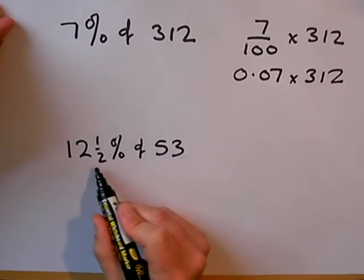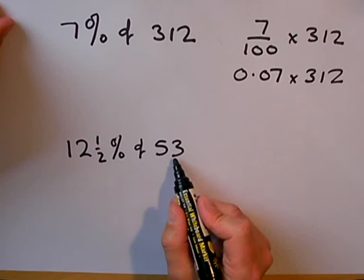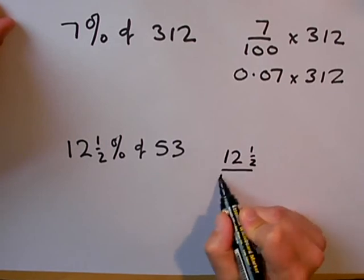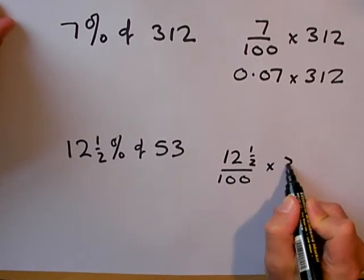What about 12.5% of 53? Well, we can write this as a fraction, 12.5 out of 100, and multiply by 53.